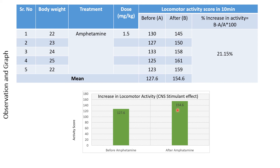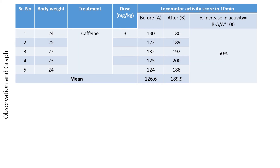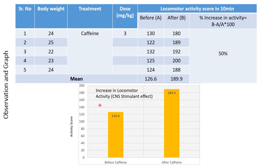This increase demonstrates the CNS stimulant effect of amphetamine. The next drug is caffeine, also a CNS stimulant. Initially before caffeine, the activity score was around 126.6, but after giving caffeine, the locomotor activity score of the mice increased to 189.9. On the graph, this clearly shows the activity score rising from 126.6 to 189.9, indicating the CNS stimulant effect of caffeine.